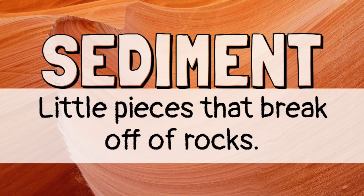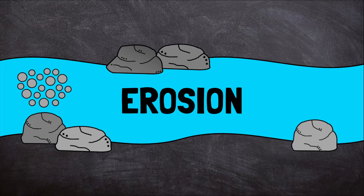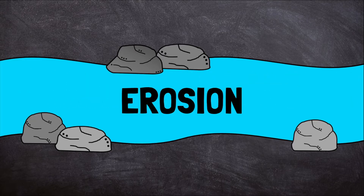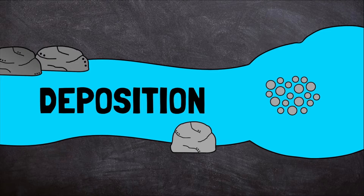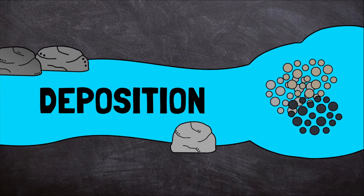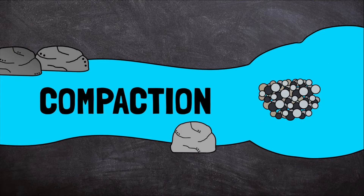The little pieces that break off of rocks are called sediment. This is where the name sedimentary comes from. Sediment is eroded, or carried away, by wind, water, or gravity. Next, it is deposited and collects somewhere. After many years, more and more layers of sediment build up in that place. The weight of all those layers presses the tiny pieces of sediment together. This is called compaction.